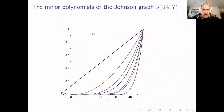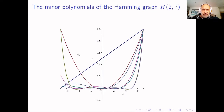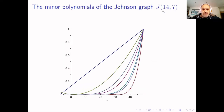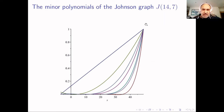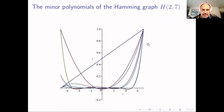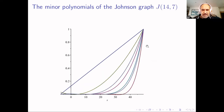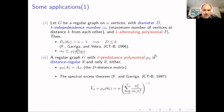Just to compare, this is the bipartite case. The Hamming graph is bipartite and antipodal. The Johnson graph is another example of an antipodal graph, but in this case it is not bipartite. You can see the difference between the bipartite and non-bipartite cases. Now let's go to some applications.